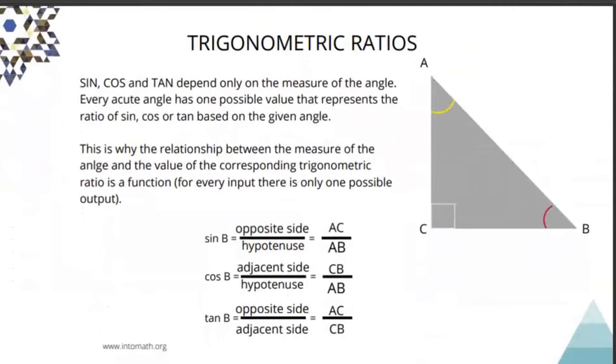Sine, cosine and tangent depend only on the measure of the angle. Every acute angle has one possible value that represents the ratio of sine, cosine or tangent based on the given angle. This is why the relationship between the measure of the angle and the value of the corresponding ratio is a function. For every input, there is only one possible output.